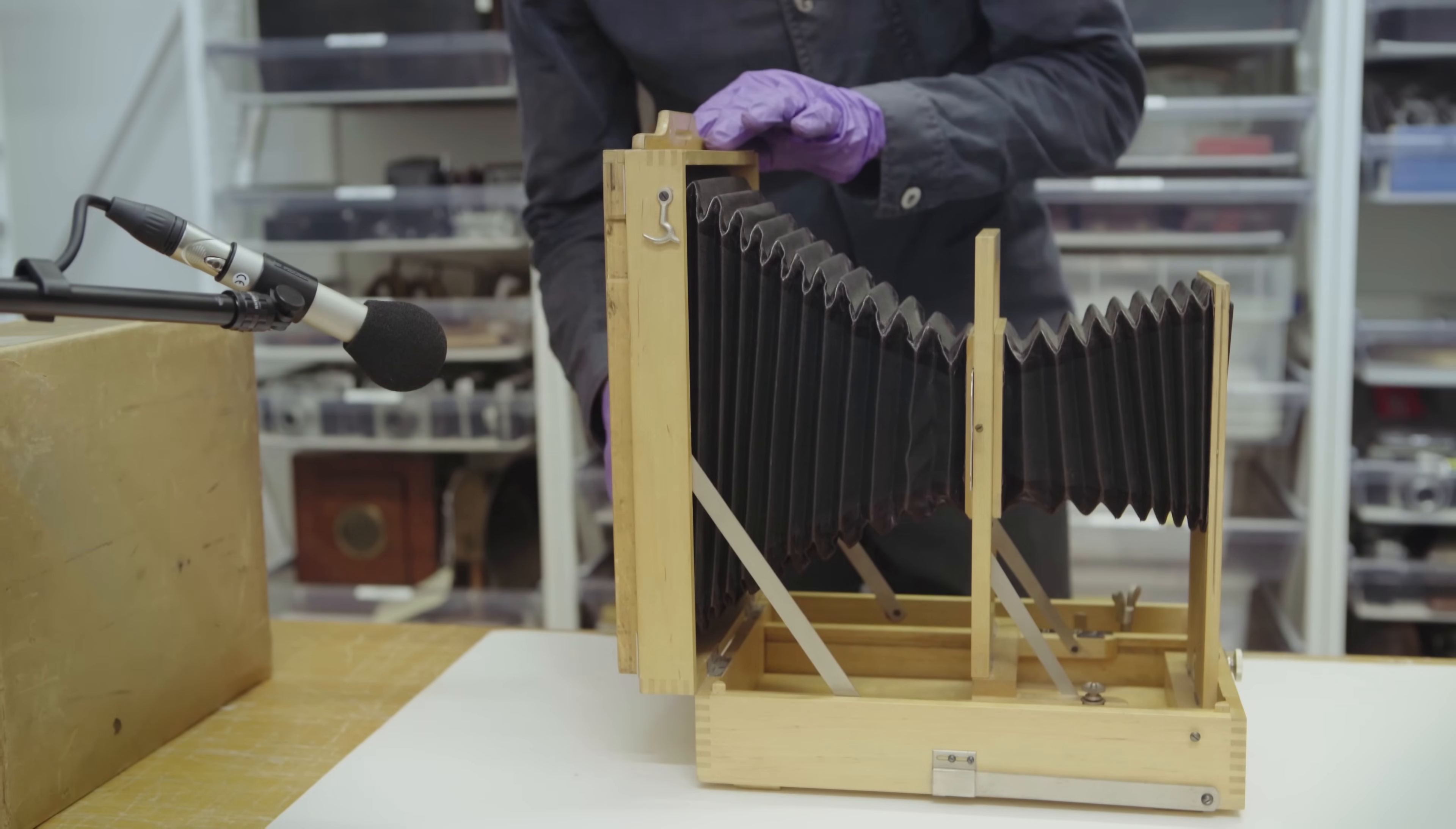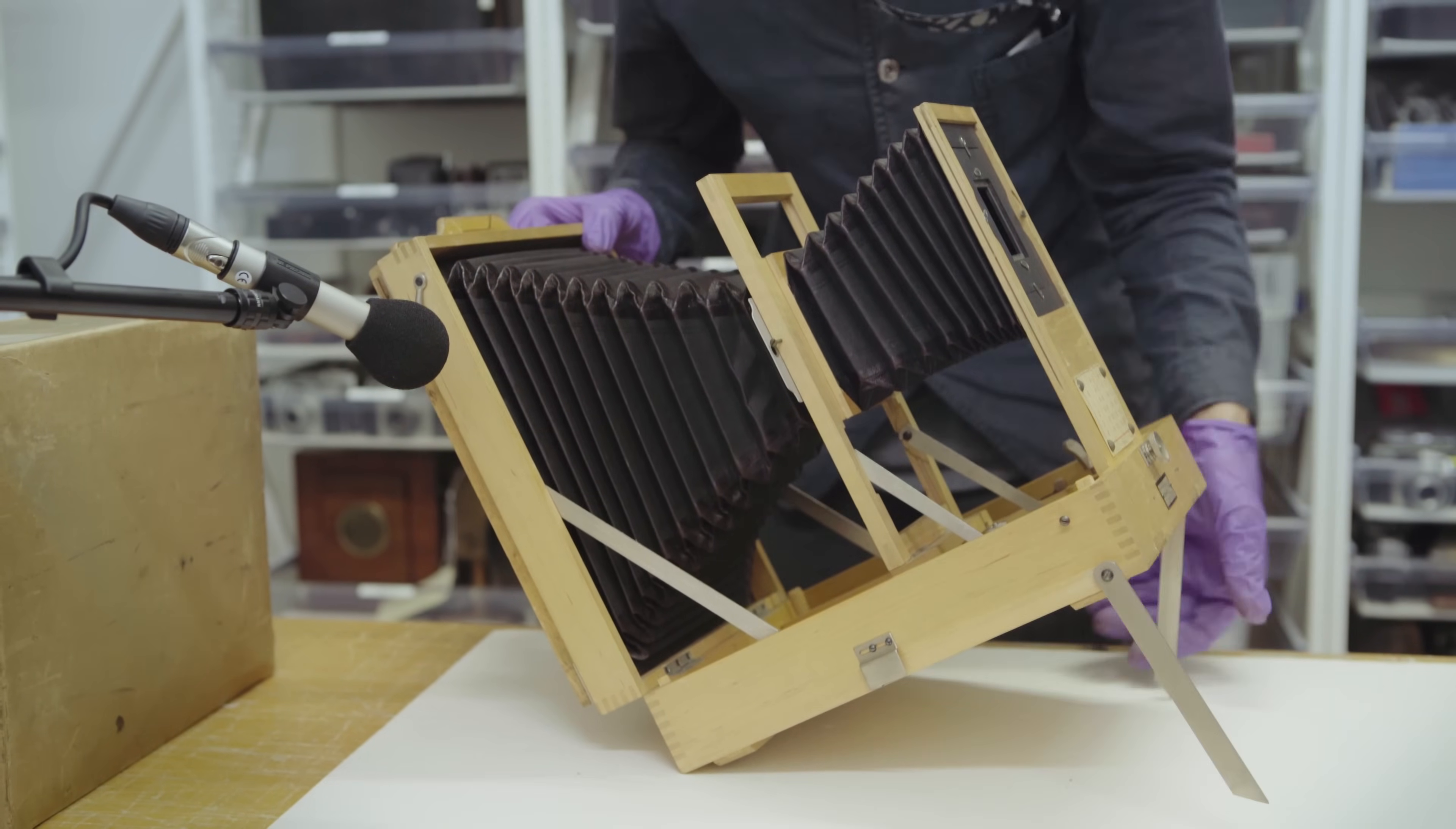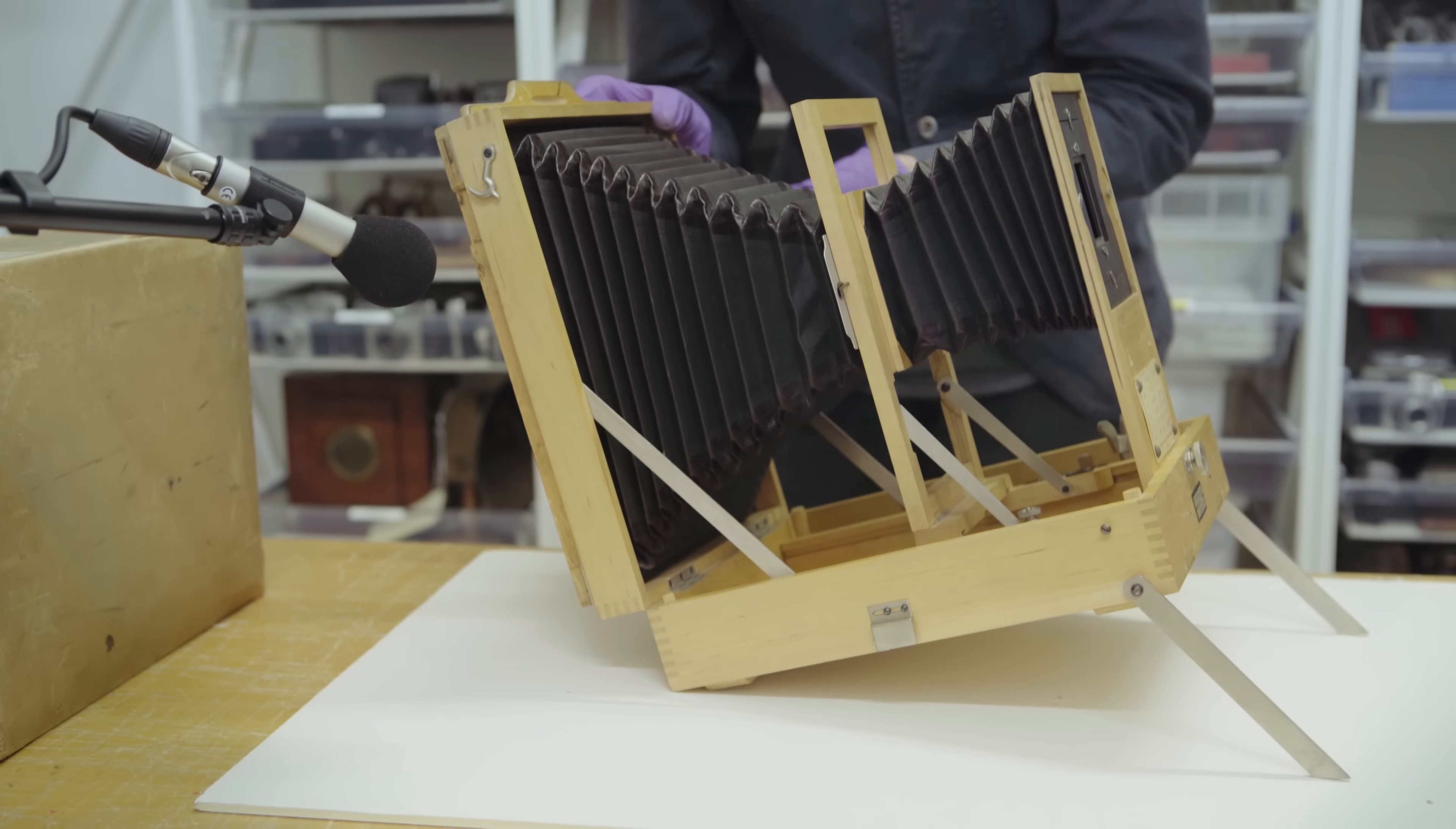Once everything was ready to go, you would remove the dark slide and you would then tilt the daylight enlarger up towards the sunlight. Depending on the paper you were using, the size of the negative, and how bright the sunlight was, that would all affect how long you would leave the image to develop.